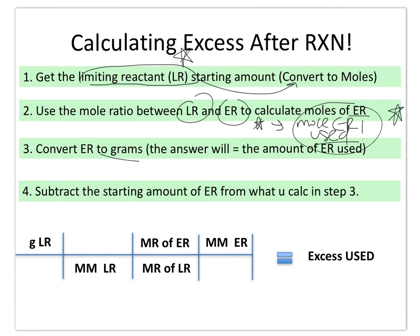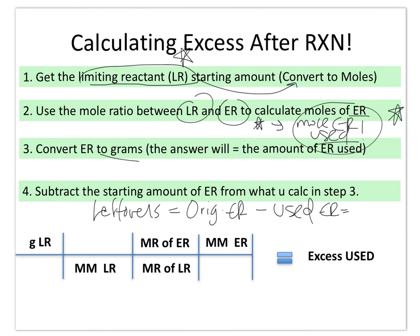In order to figure out the amount of excess reactant that remains — basically your leftovers — you're going to take the original amount of excess reactant and subtract out the used excess reactant. This is going to give us our leftovers. You can figure out how much excess reactant gets used by the steps shown, and you can figure out how much is left over by taking the quantity that was used and subtracting it from the original amount.